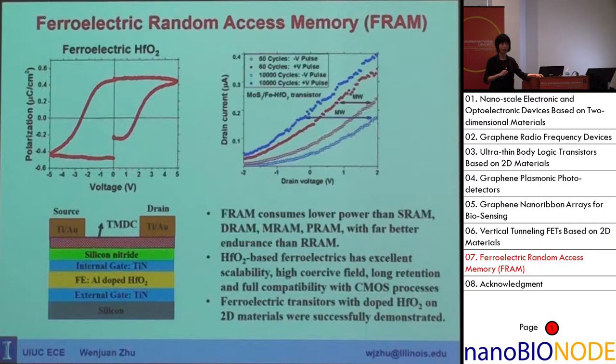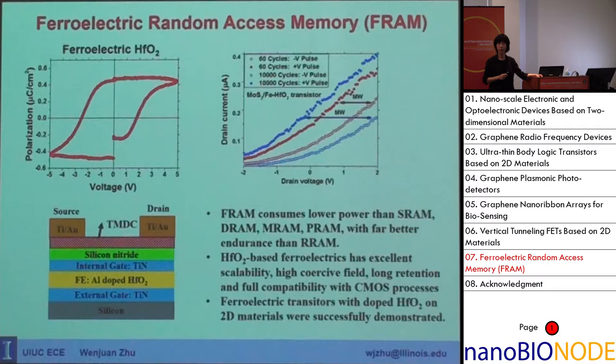Recently, a new ferroelectric material was discovered: hafnium oxide-based ferroelectrics. If you dope aluminum, zirconium, or lanthanum into hafnium oxide, this high-k dielectric becomes ferroelectric. This new material has excellent scalability — you can scale it below 5 nanometers and still get very strong ferroelectricity.